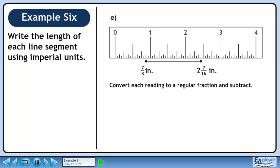Convert each reading to a regular fraction and subtract. 2 and 7 sixteenths can be written as 39 over 16. 7 over 8 is already a regular fraction.